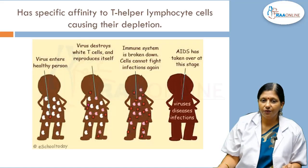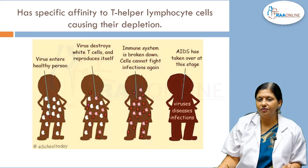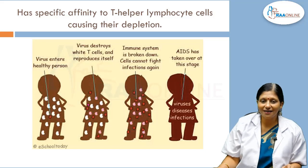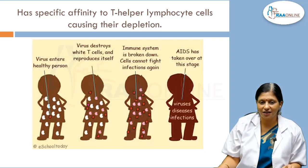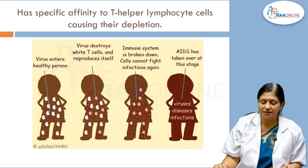The HIV virus has a very specific affinity to T helper lymphocytes and causes a depletion of them. When the virus enters a healthy person, it destroys the T helper lymphocytes, and as it reproduces, the immune system is gradually broken down. The cells cannot fight back infections against HIV, and other diseases and carcinomas also manifest.